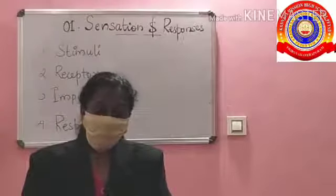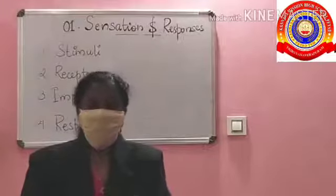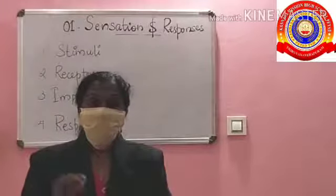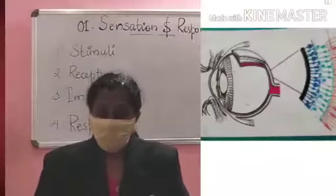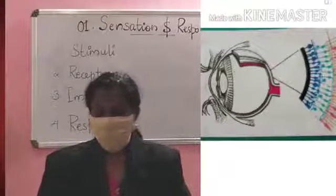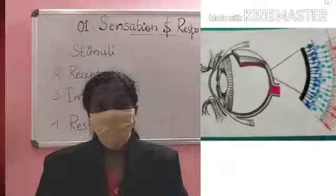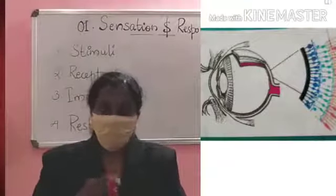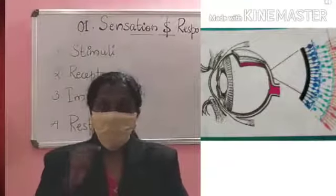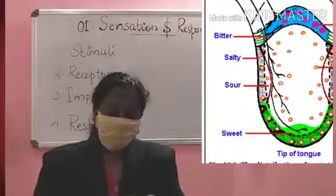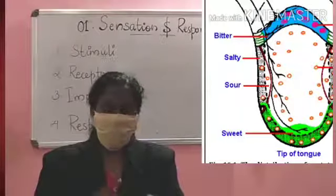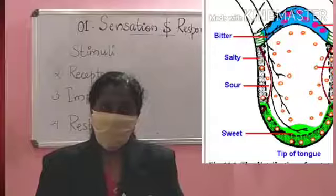Second one is the receptor. The sense organs such as eyes, ear, nose, tongue, and skin have special types of receptors. The eye has special receptors in the retina. The tongue contains receptors for sour, bitter, salt, and sweet — these tastes can be identified through those receptors.